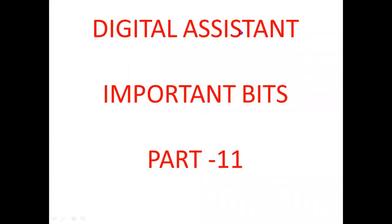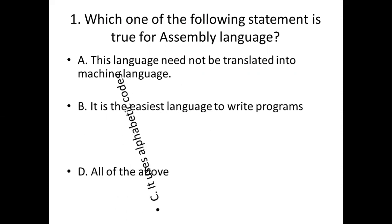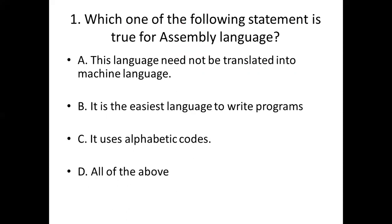First bit: Which one of the following statements is true for assembly language? Option A: this language need not be translated into machine language. Option B: it is the easiest language to write programs. Option C: it uses alphabetic codes. Option D: all of the above. Answer: Option C — it uses alphabetic codes.